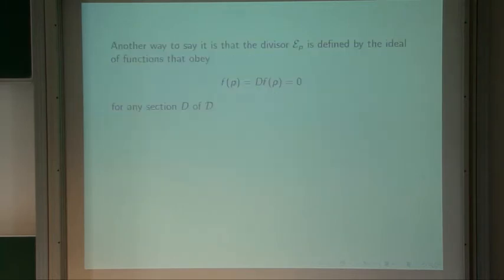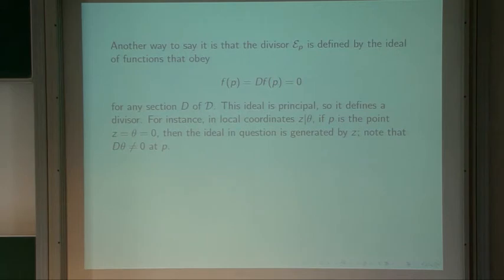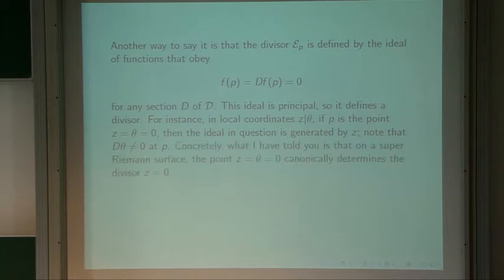Here's another way to say it. Given a point P, define the ideal of functions that vanish at P along with their derivative in the distinguished direction. That's a principal ideal. For example, in local coordinates z and theta, suppose P is where z and theta are 0. If we allowed all functions vanishing at that point it would not be principal — it has two generators z and theta. But if we ask that functions obey both conditions, theta doesn't qualify, and the ideal is in fact a principal ideal generated by z. So on a super-Riemann surface, in superconformal coordinates, the point where z and theta are 0 canonically determines the divisor where z is 0.